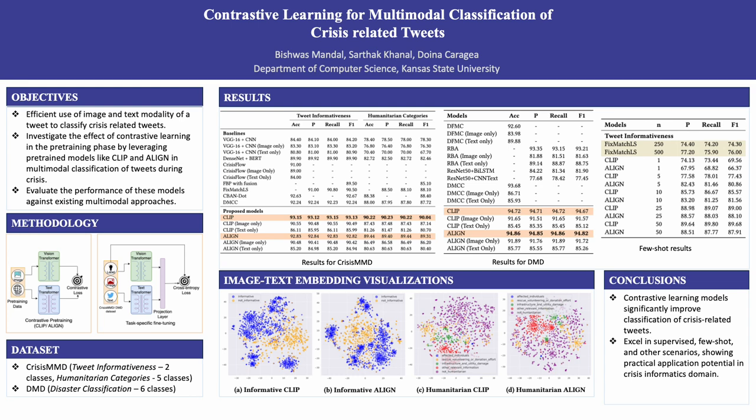We evaluate our methods using two widely used multimodal crisis datasets known as Crisis MMD and DMD. Crisis MMD has two classification tasks, namely tweet informativeness and humanitarian categories. Tweet informativeness is a binary classification task to predict whether a tweet is informative or not. Similarly, the humanitarian categories task has five different classes, and the DMD dataset has a disaster classification task with six classes.